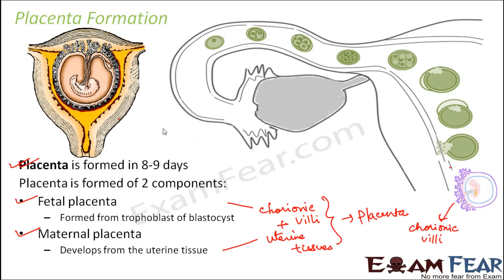Here you can see the chorionic villi on the outermost layer, and this entire structure is the uterus. The inner mass of cells is gradually developing into a small baby — you can see a rough sketch of a baby. This baby is connected by a rod-like structure to the mother's uterus. That structure is the placenta, and the rod-like structure connecting the baby's abdomen to the placenta is known as the umbilical cord. Through this, all the nutrients come inside the fetal body.